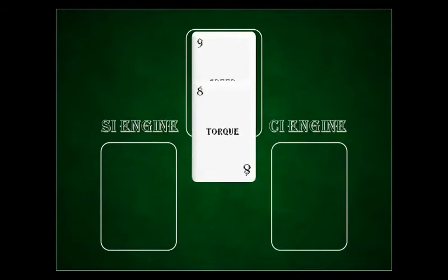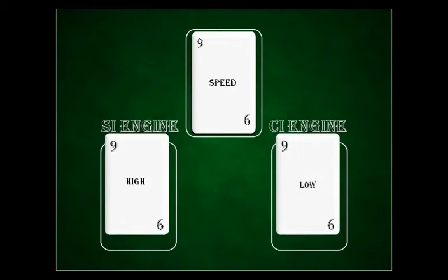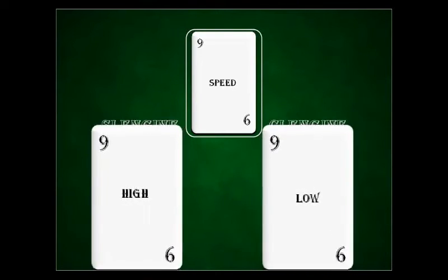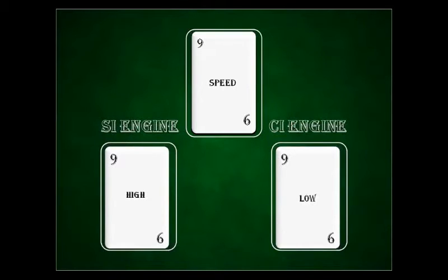Next is speed achieved by the engine. Petrol or SI engines are lightweight and the fuel is homogeneously burned, hence achieving very high speed. CI engines are heavier and the fuel is burnt heterogeneously, hence producing lower speed. One other reason for this is the increase in crank radius in the case of diesel engines.